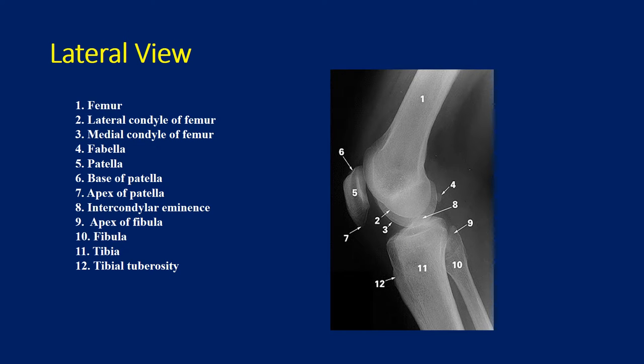The lateral view is a good view to see the patellofemoral joint, distal femur, and proximal tibia. You can identify fractures. You can see the contour of each condyle, as well as the tibia and the patella.